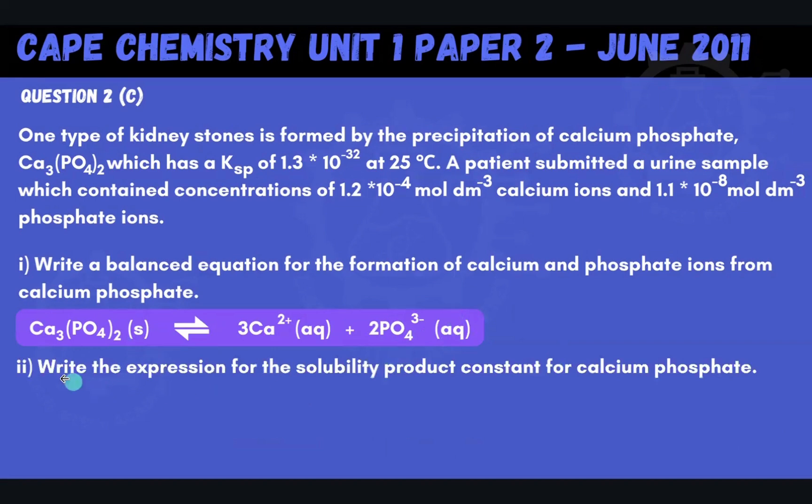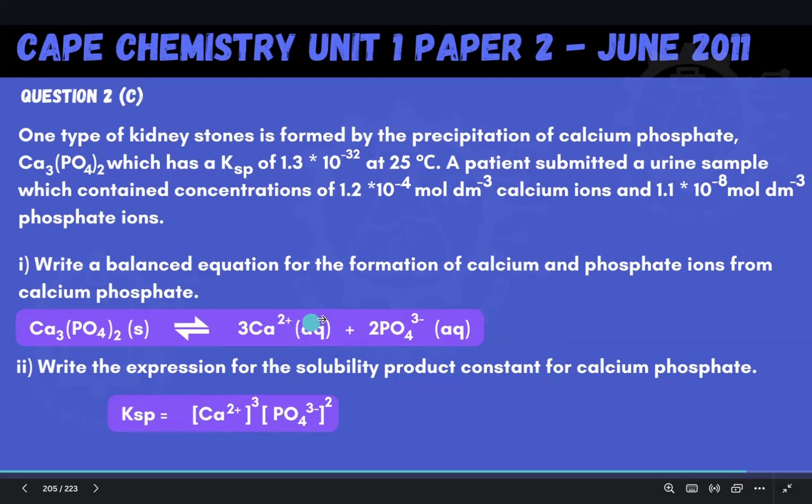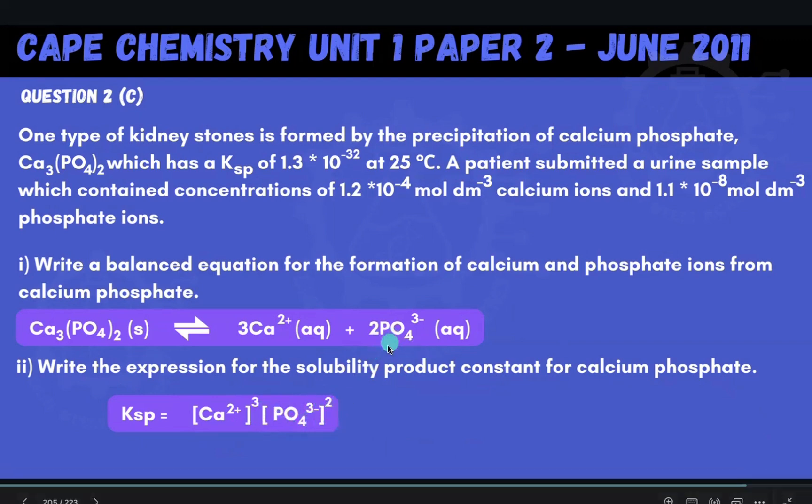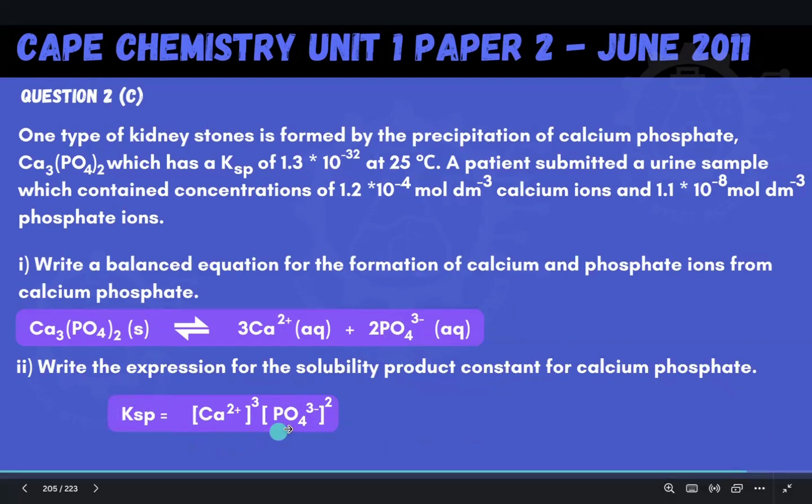And so next, we're being asked to write the expression for the solubility product constant, so that's Ksp for calcium phosphate. So here's our Ksp expression. We're going to have our products, so the ions. So we're going to have the Ca2 plus, the concentration of that cubed, since there is a 3 there for the balancing for that. So we do calcium ions raised to the power of 3, the concentration of that, times the concentration of phosphate ions squared, because there's a 2 in front of the phosphates. And so that's our Ksp expression there for calcium phosphate.